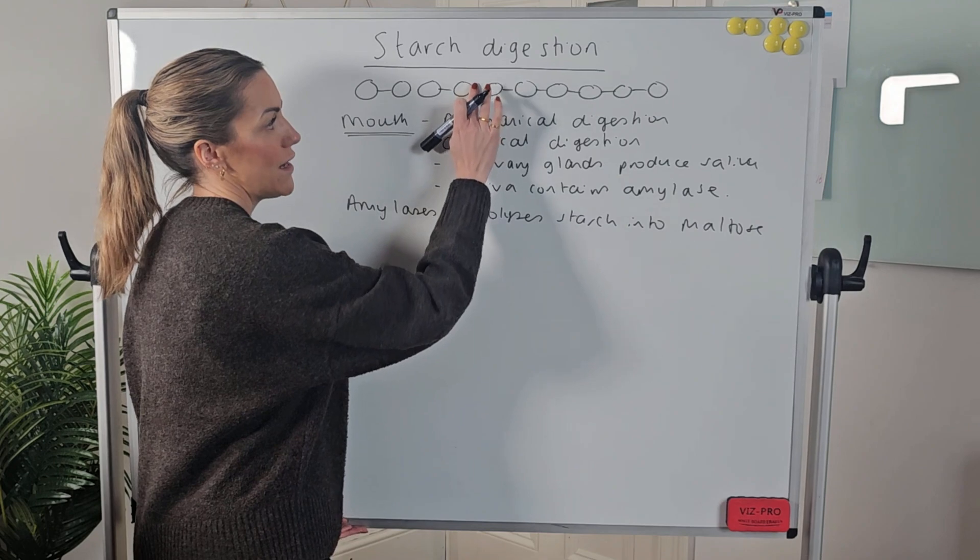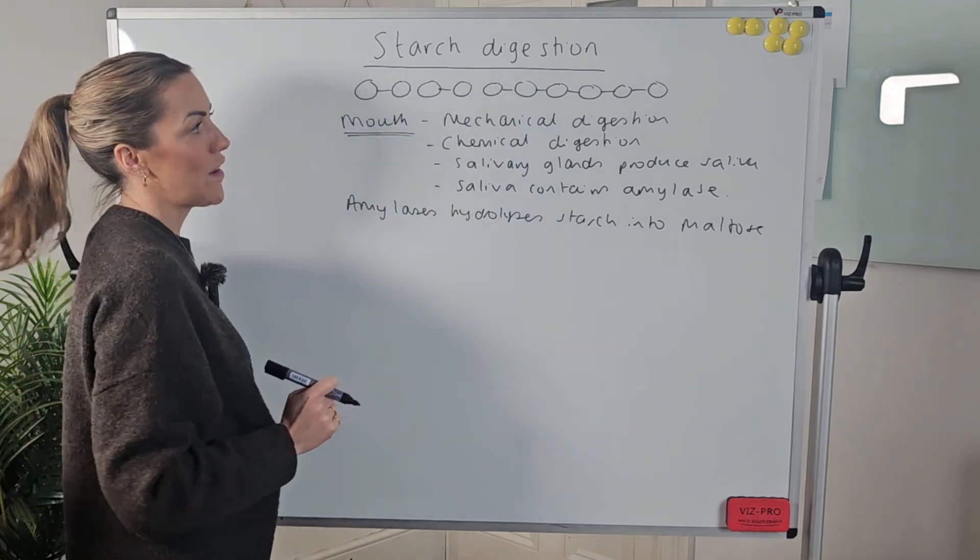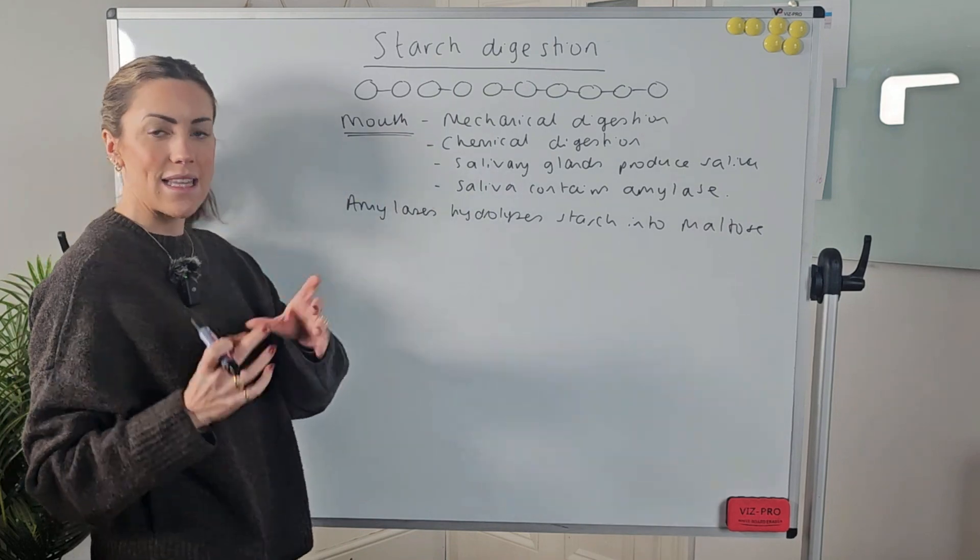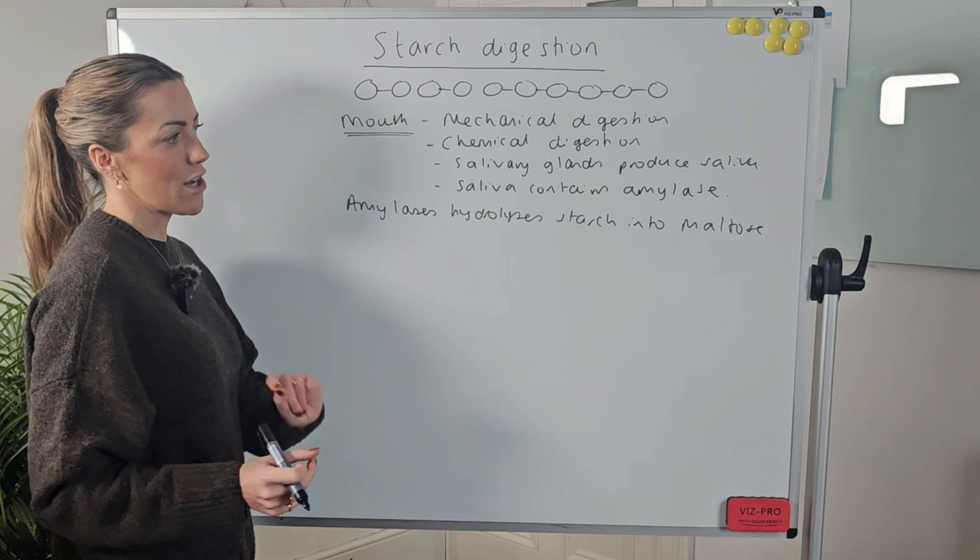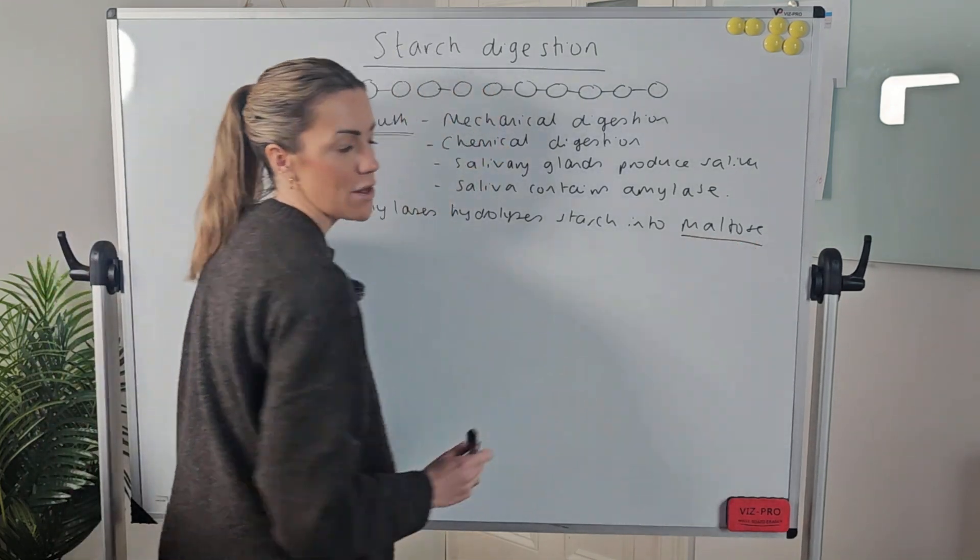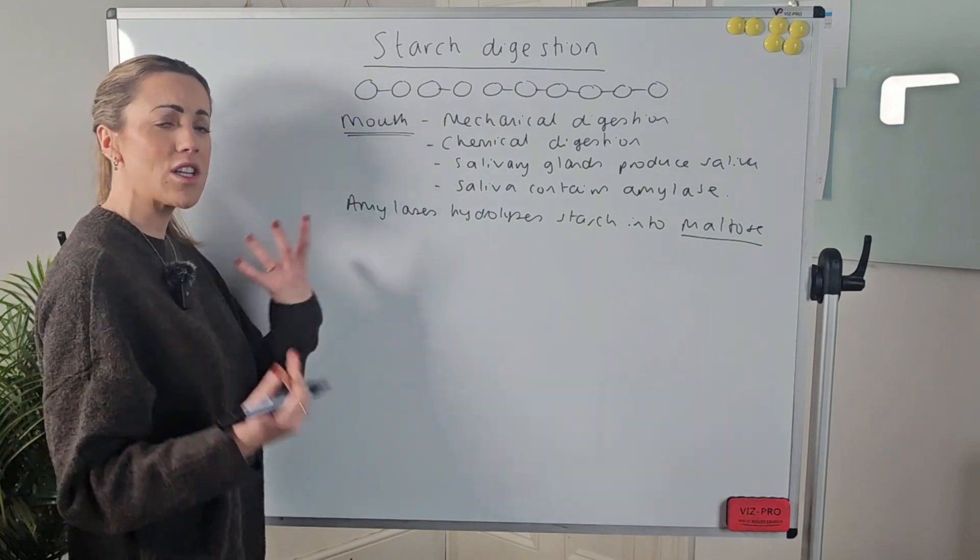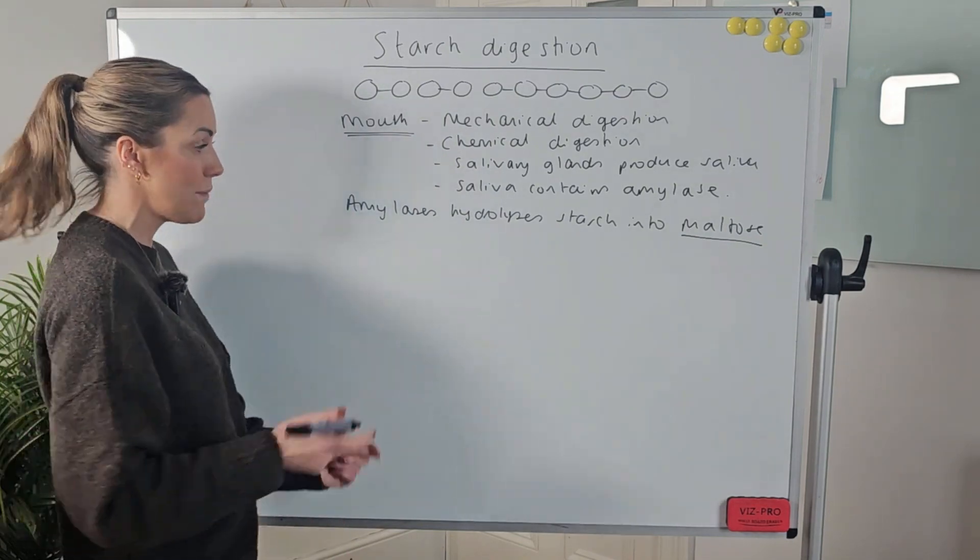So again, I could do another hydrolysis of a glycosidic bond here, and I'm hydrolyzing the big polysaccharide starch into disaccharides called maltose. Now obviously then we're going to swallow, it's going to go down our esophagus, it's going to go into our stomach.